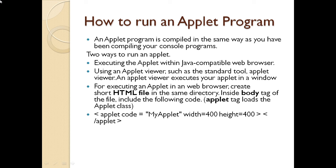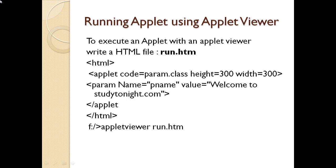Now, how do you run the applet? We run the applet using the applet viewer. So, to execute an applet within an applet viewer, we write a short file. Let's say HTML file. For example, run.htm. In that, I call the HTML tag. I call the applet code and the param.class. So, I need to call the class file which I have compiled here. I specify the height of the applet and the width of the applet.